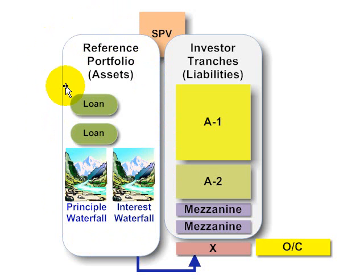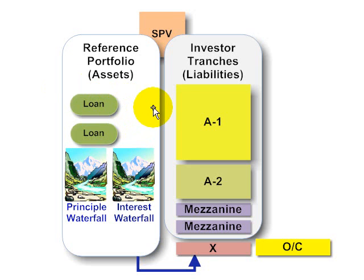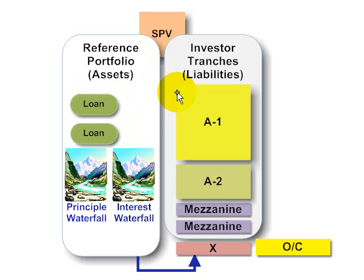Recall, there are many different types and flavors of credit-sensitive assets. Nowadays, given the credit crunch, it's probably helpful to think about these as mortgage loans. On the right, we have the liabilities, because the special purpose entity has issued securities — these are obligations to the investors who have really purchased an exposure to the credit risk on these assets.